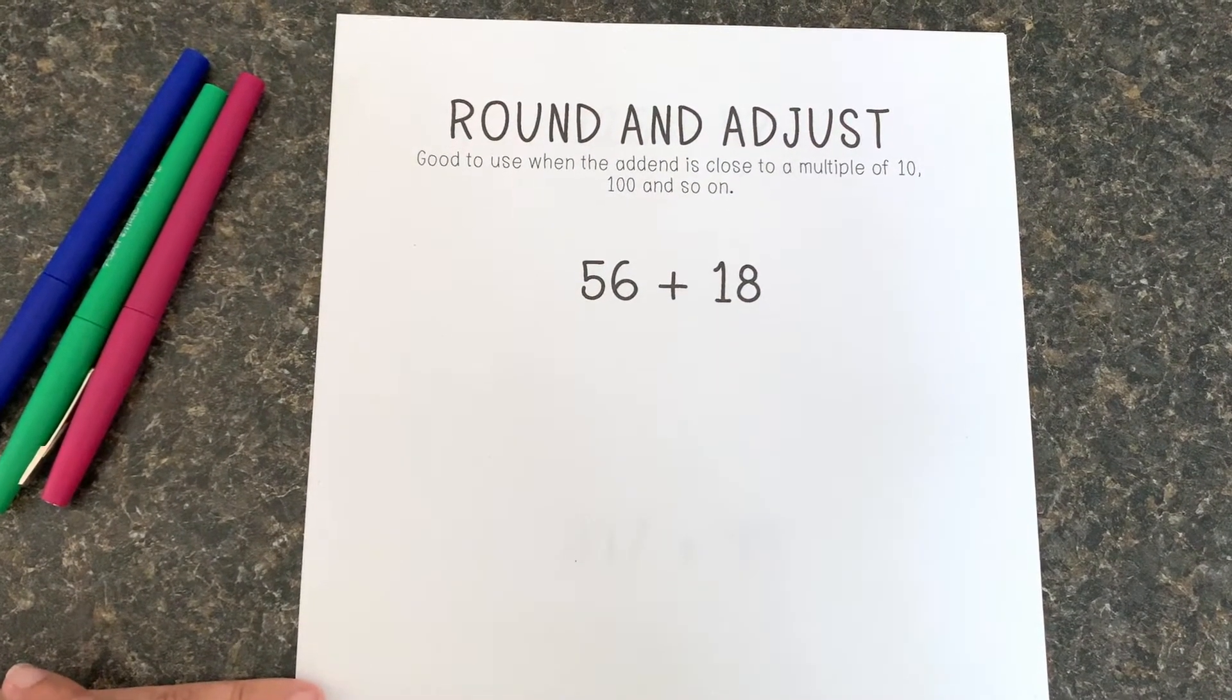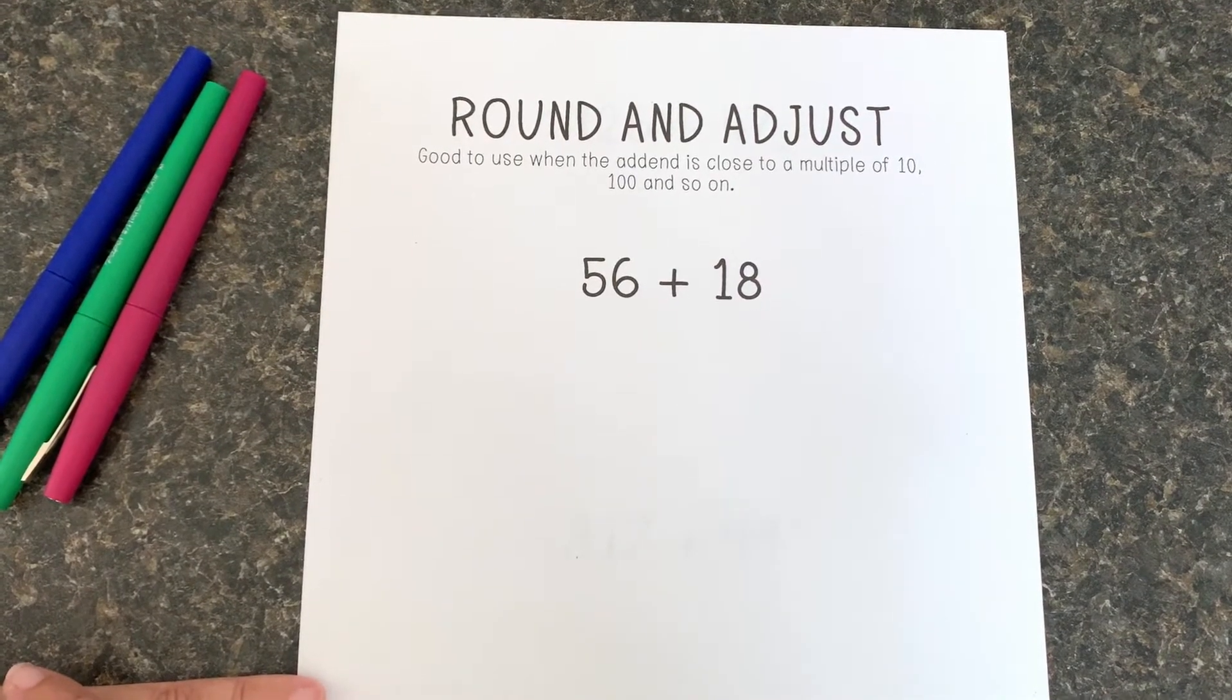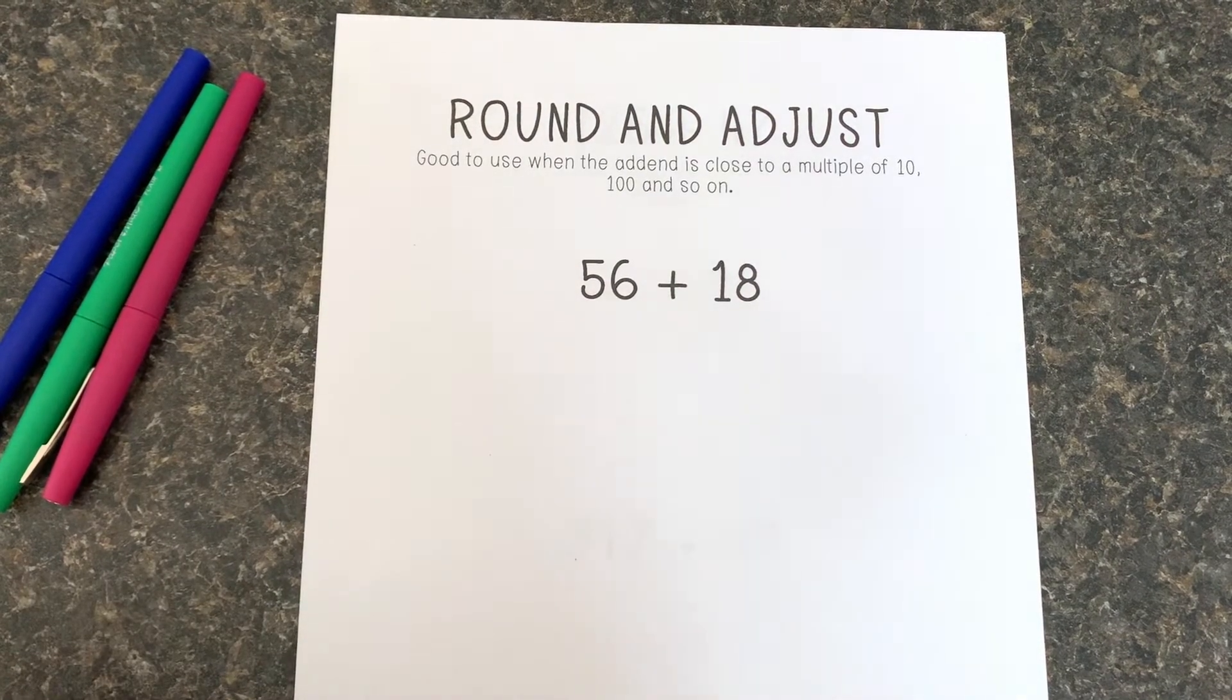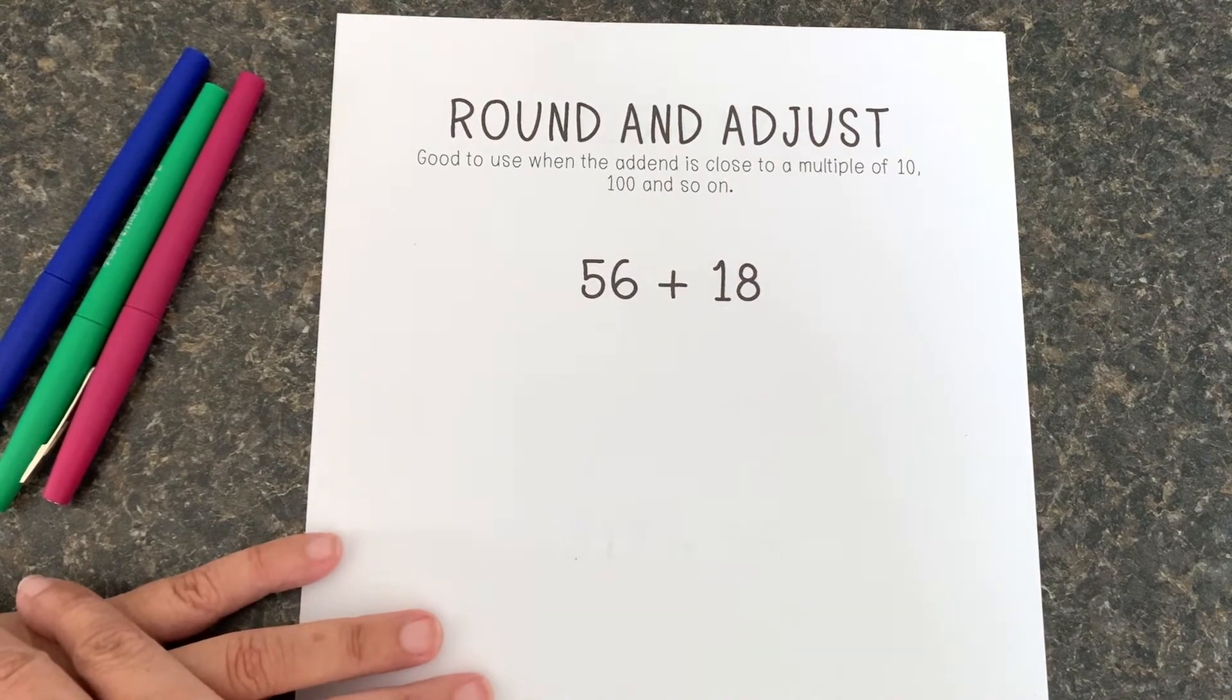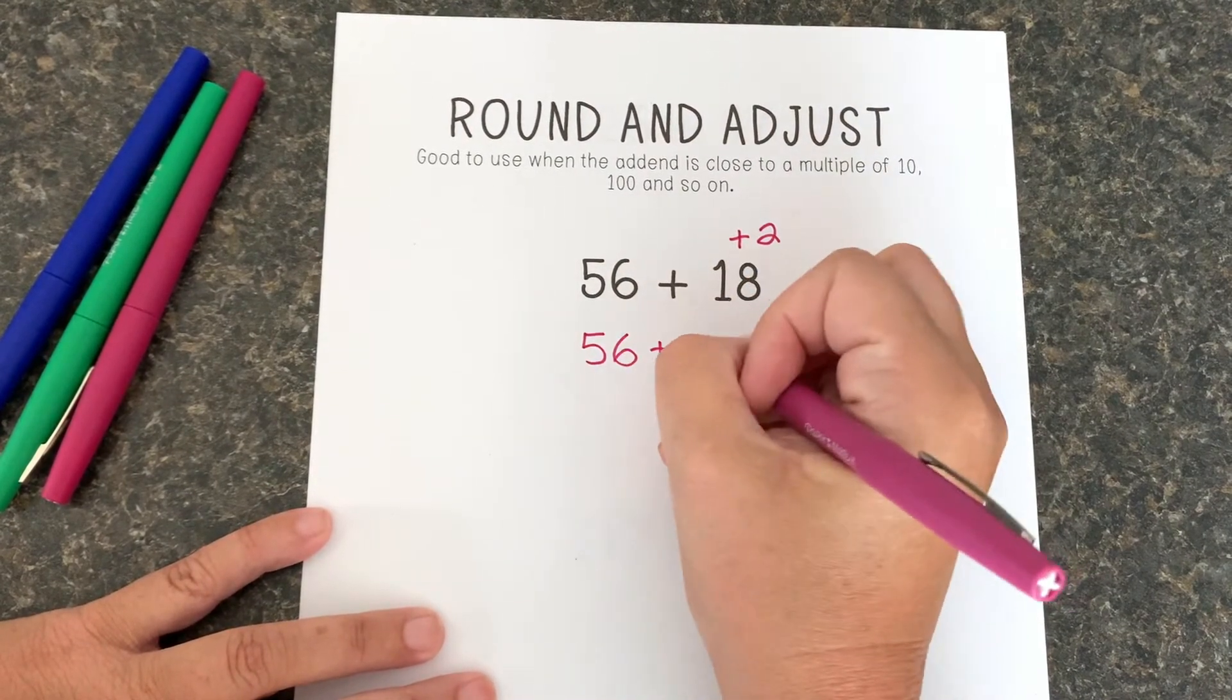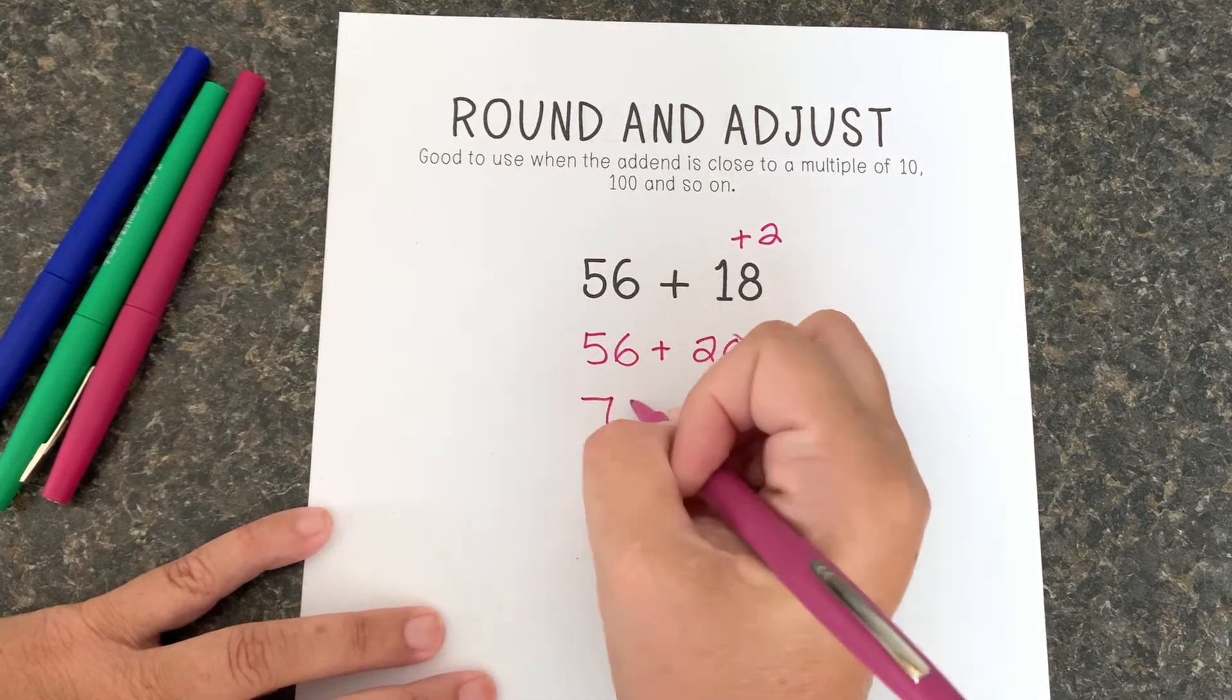Alright, so we're gonna work on the round and adjust strategy for adding, and it's a great strategy to use when one of the addends is very close to a multiple of 10. So in 56 plus 18, 18 is very close to a multiple of 10. So I'm gonna round. I'm gonna add 2 to 18 to make it 56 plus 20, and 56 plus 20 is 76.